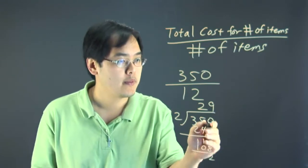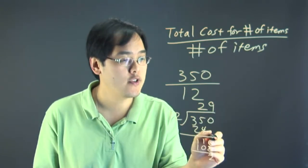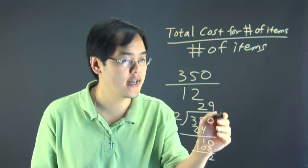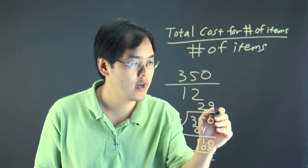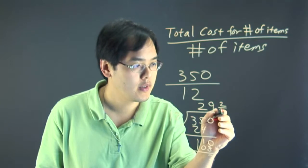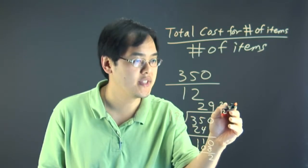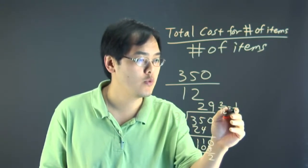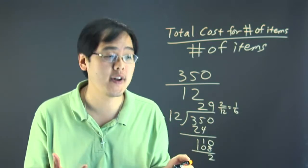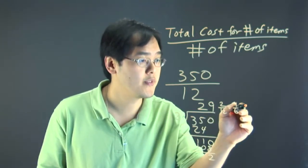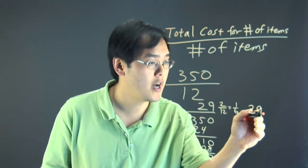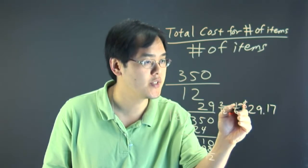Now 29. So the average total cost here is about $29 and 2 twelfths is 1 sixth. So 1 sixth in terms of decimals, if you want to find that out, is about 0.17. So the average total cost is about $29.17 per item.